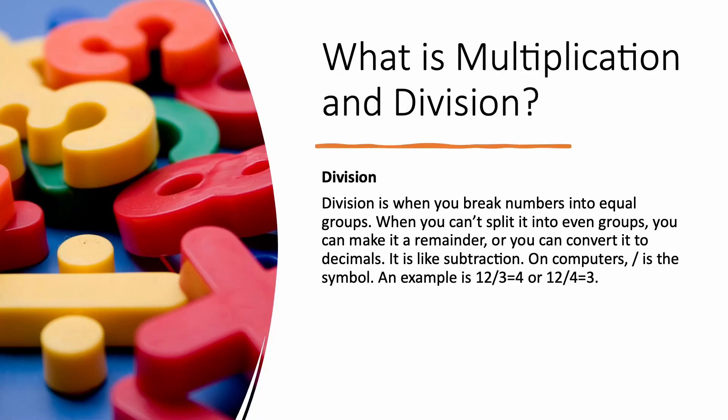So what is division? Division is when you break numbers into equal groups. When you can't split it into even groups, you can make it a remainder or convert it to decimals. It is similar to subtraction. On computers, the forward slash is the symbol. An example of division is twelve divided by three equals four or twelve divided by four equals three.